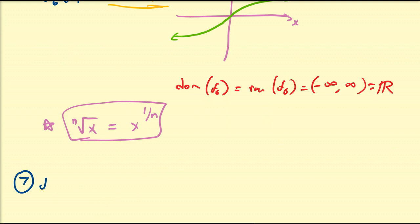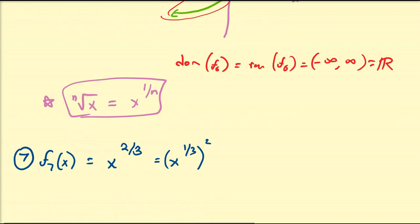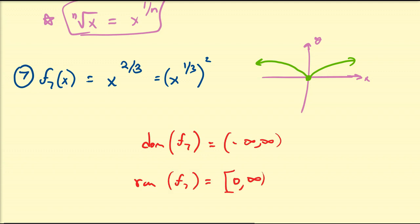Another special function is f₇(x) = x to the 2/3 power. Notice that x^(2/3) is the same as the cube root of x, squared. If we take the cube root of x and square all those values, all the negative outputs become positive. You get a curve that looks like a little bird sketch — some people call it the bird graph. The domain of f₇ is all real numbers, and the range is all positive numbers, as a result of the squaring process.